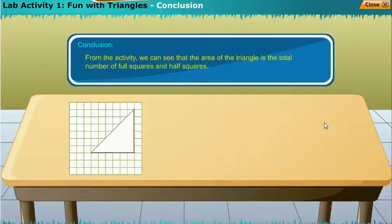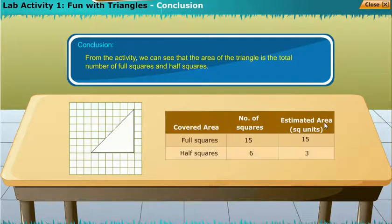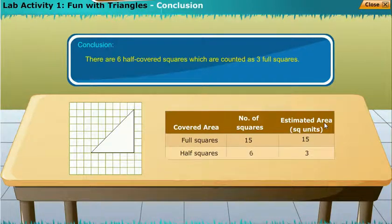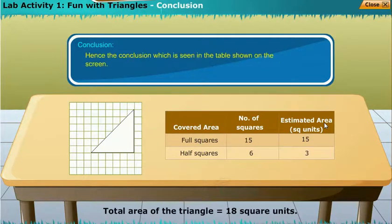Conclusion: From the activity, we can see that the area of the triangle is the total number of full squares and half squares. There are six half covered squares which are counted as three full squares. Hence the conclusion which is seen in the table shown on the screen.